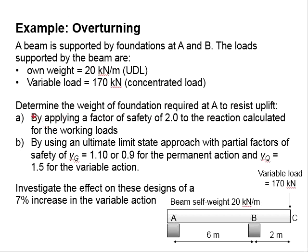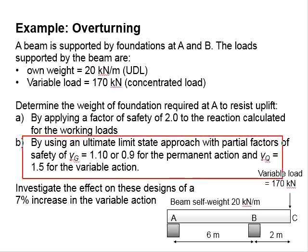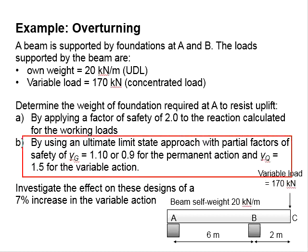The first method is by applying a factor of safety equal to 2.0 to the reactions calculated from the working loads. The second method is by using the ultimate limit state approach with partial factors of safety equal to 1.1 and 0.9 for the permanent actions and 1.5 for the variable actions.